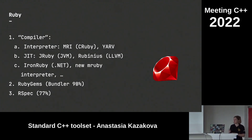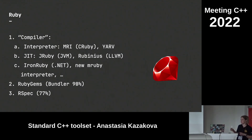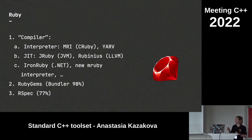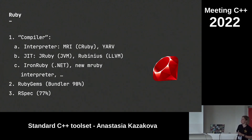Ruby is a little bit tricky because it doesn't need a compiler — it's an interpreter. They have several implementations: MRI is the original Ruby implementation, also called CRuby; YARV is yet another Ruby VM that the Ruby author is currently developing; JRuby is for the JVM; and IronRuby is for .NET. So there were several implementations.